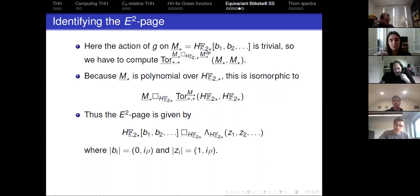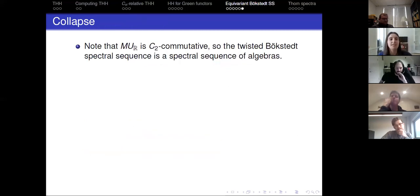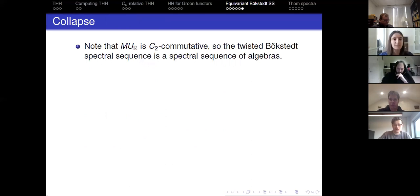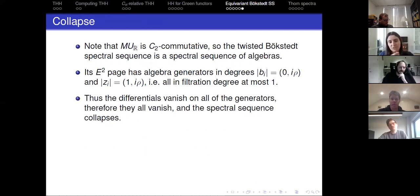So the E2 page is the polynomial thing tensor the exterior thing, where the Bi's are in bidegrees (0, I-rho) and the Zi's are in degrees (1, I-rho). That's the form we wanted the E2 page to be. Now we want to see that the spectral sequence collapses, i.e., the E2 page equals the infinity page. This is where it's useful that this is a spectral sequence of algebras — MUR is C2-commutative. The E2 page has algebra generators in degrees (0, I-rho) and (1, I-rho), all in filtration degree at most one, so all differentials vanish on the generators and the spectral sequence collapses.